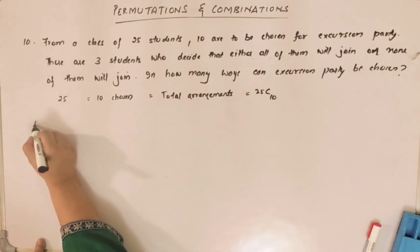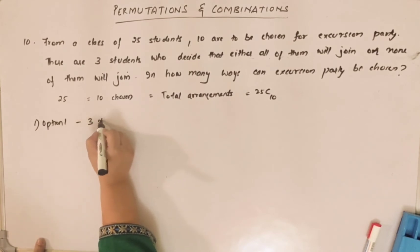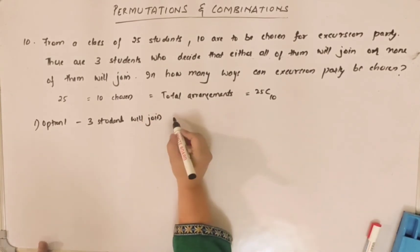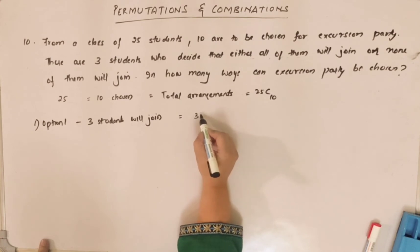First, let's take condition one, option one. Three students will join. If three students join, then let's take these three students as one unit.